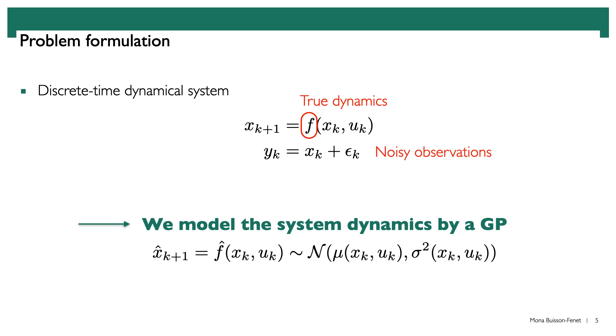For each given state and control input, this Gaussian process model gives us a prediction over the next state in the form of a normal distribution. The mean of this normal distribution is the most likely next state, and the variance of this distribution represents how certain we are about a prediction.